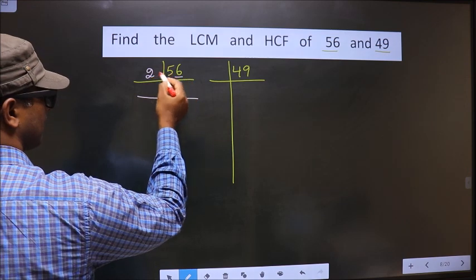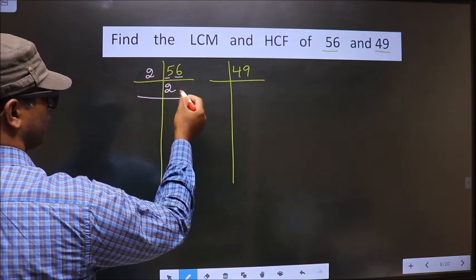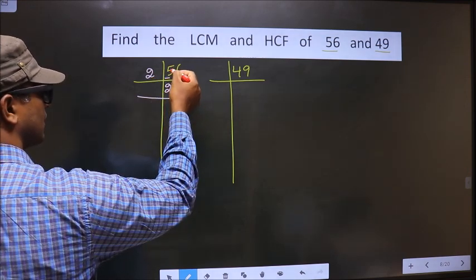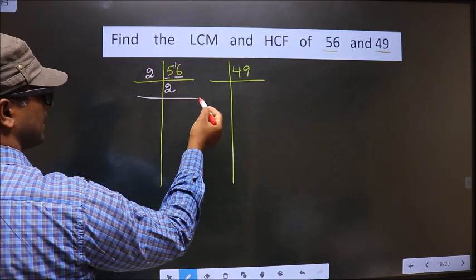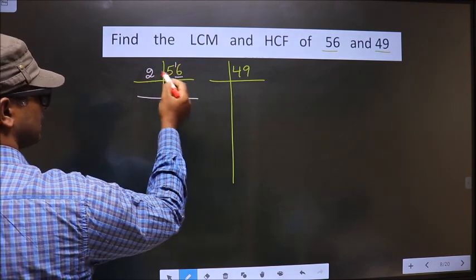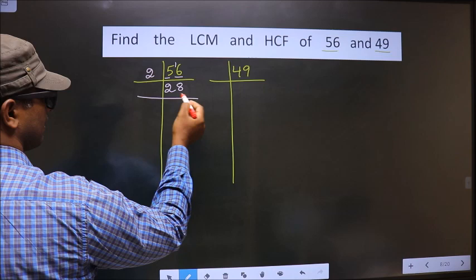A number close to 5 in the 2 table is 2 times 4. 5 minus 4 is 1, carried forward making it 16. When do we get 16 in the 2 table? 2 times 8 is 16.